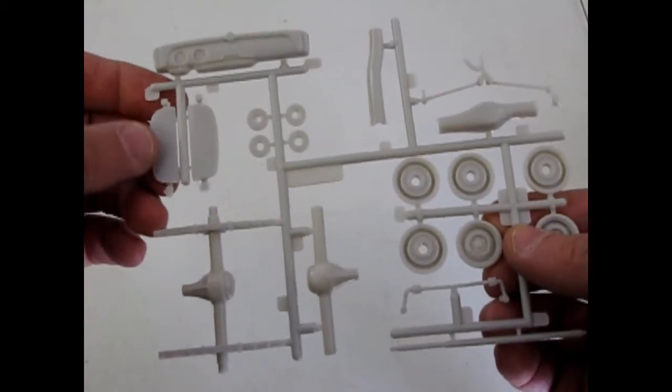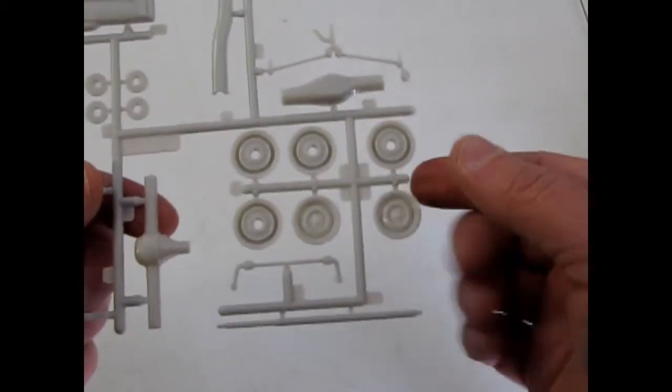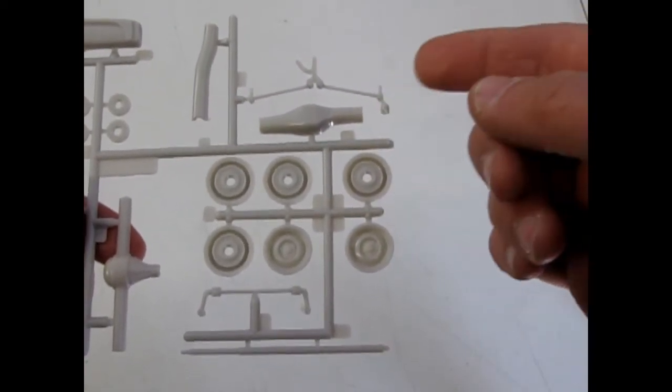The dashboard, fender skirts, rear axle, wheel backs and wheels. And of course your under hood pieces.